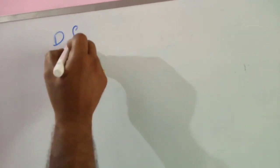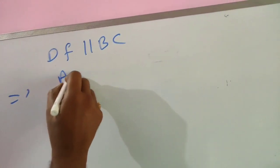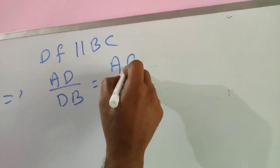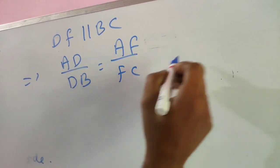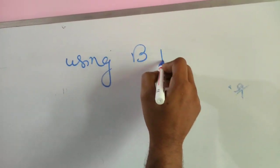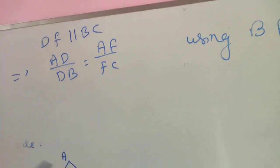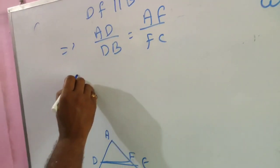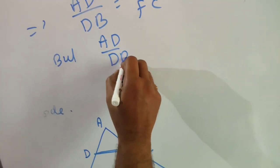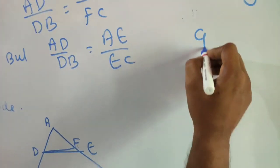DF is parallel to BC, which implies AD/DB is equal to AF/FC, using the Basic Proportionality Theorem which we have already learned. But AD/DB is equal to AE/EC — this is given.